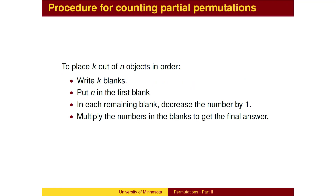In general, to place k out of n objects in order, we will need to multiply k numbers together. So we begin by making k blanks. In the first blank, we have n choices. In each successive blank, we have one fewer choice. Once all of the blanks are filled, multiply the numbers together according to the general counting principle.